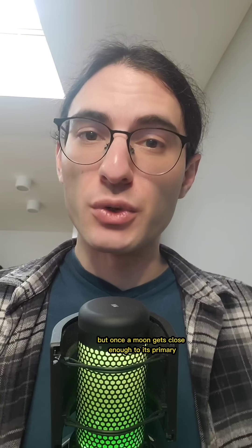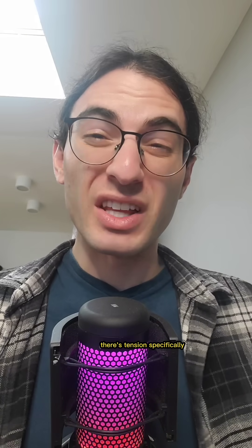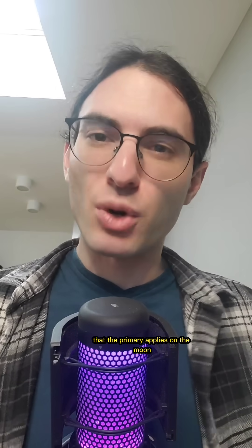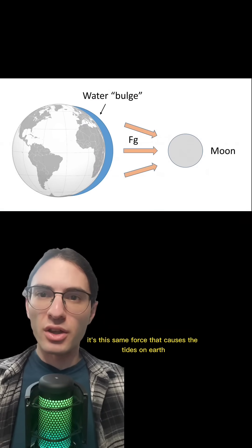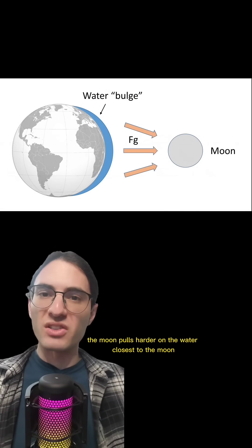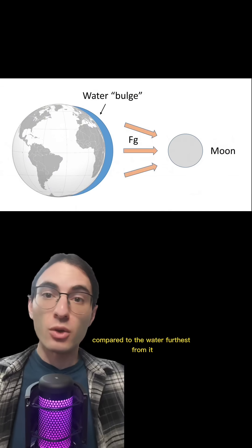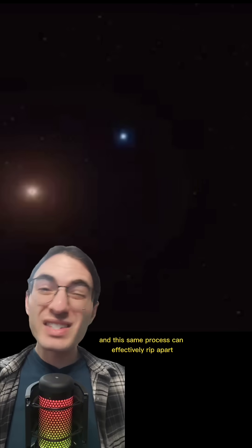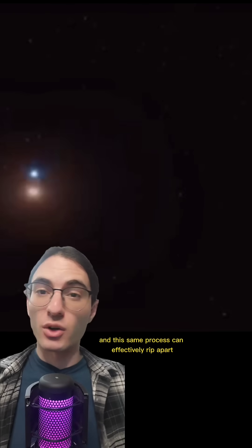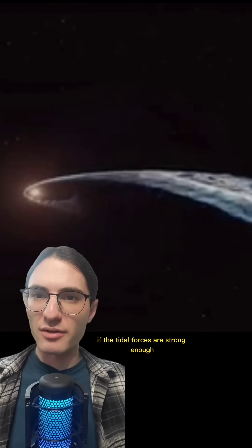But once a moon gets close enough to its primary, there's tension. Specifically, there's a so-called tidal force that the primary applies on the moon. In fact, it's this same force that causes the tides on Earth. The moon pulls harder on the water closest to the moon compared to the water furthest from it, so the water gets a little more of a tug. The end result is higher water levels. And this same process can effectively rip apart a gravitationally bound secondary if the tidal forces are strong enough.